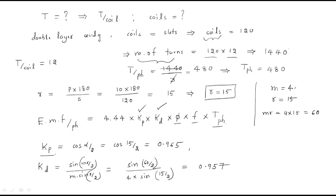Observe that both the short pitch factor and distribution factor are less than 1. This is important because we use these factors to reduce harmonics generated by the alternator. Our requirement is a pure fundamental, pure sinusoidal output — that is why these values are less than 1.